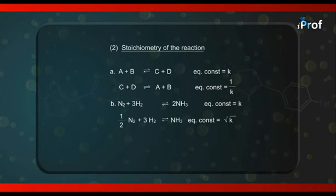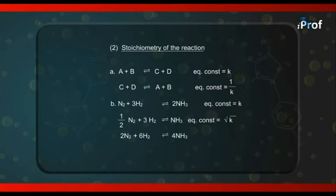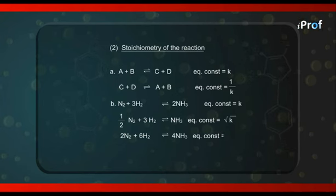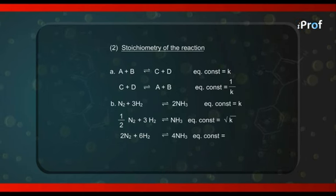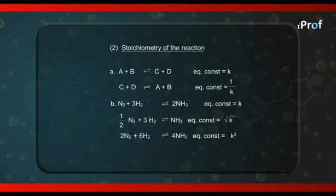Similarly, if I multiply the given equation by 2 — for example writing 2N₂ + 6H₂ = 4NH₃ — what will be the value of the equilibrium constant at the same temperature? It would be K². So if I multiply the equation by n, the new equilibrium constant is K raised to the power n. If I divide by n, the new equilibrium constant is the nth root of the previous equilibrium constant.